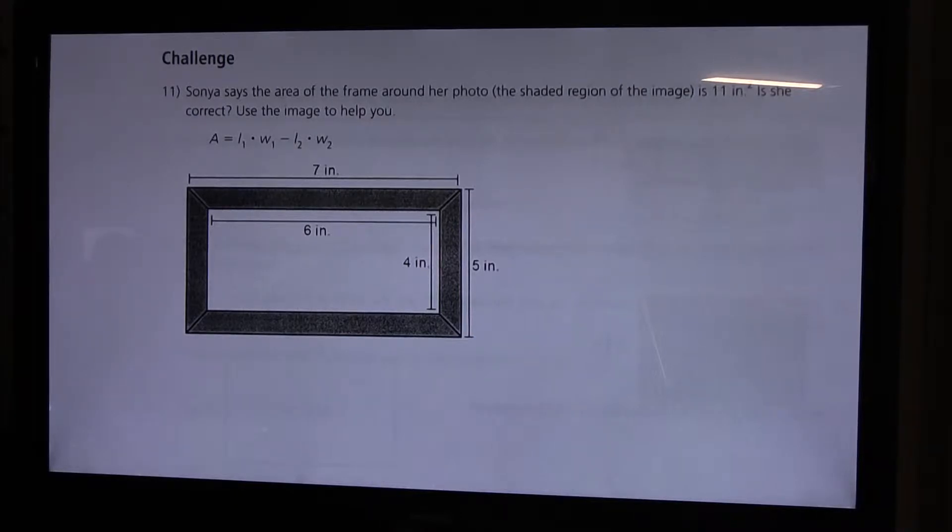So let's read what the challenge is asking us to do and try to make sense of the problem. It tells us that Sonia says the area of the frame around her photo, the shaded region of this image, is 11 inches square. Is she correct? Use the image to help you.